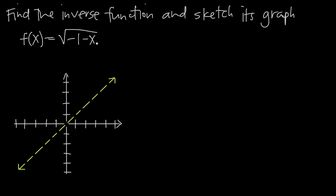What if we take a negative number like negative 1? We'd have negative 1 minus negative 1, which is negative 1 plus 1, giving us 0. So if x is negative 1, we get the square root of 0, which is just 0. So the point negative 1, 0 is on our graph.